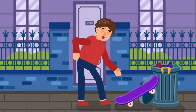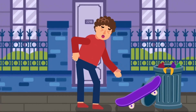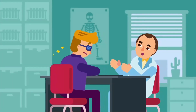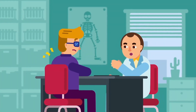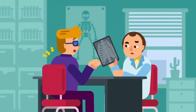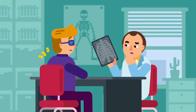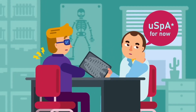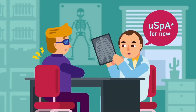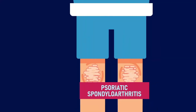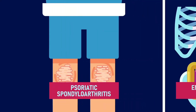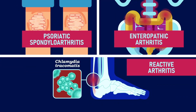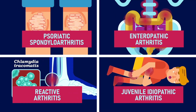It often starts in your late teens or twenties. Some conditions that can be confused with ankylosing spondylitis are non-radiographic ankylosing spondylitis, undifferentiated spondyloarthritis or USPA when the disease is still in the early stage, psoriatic spondyloarthritis, enteropathic arthritis, reactive arthritis, and juvenile idiopathic arthritis.